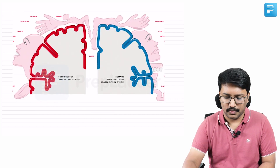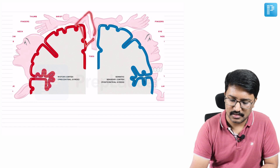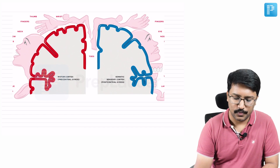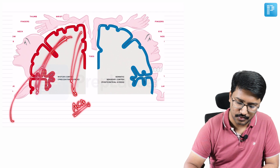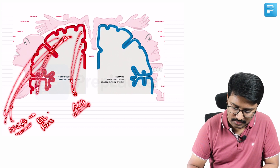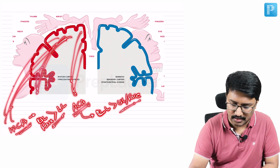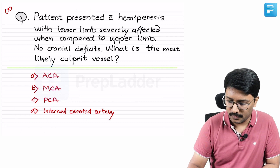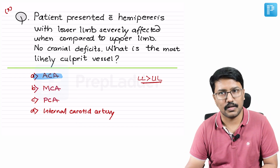We can identify the artery from the motor homunculus. The medial surface of the motor cortex represents the lower limb, and it receives blood supply from the anterior cerebral artery. The superior lateral surface, representing the face and upper extremity, gets blood supply from the middle cerebral artery. An MCA lesion gives profound upper limb and face weakness; an ACA lesion gives profound lower limb weakness. Since lower limb is more affected, the answer is ACA territory lesion.